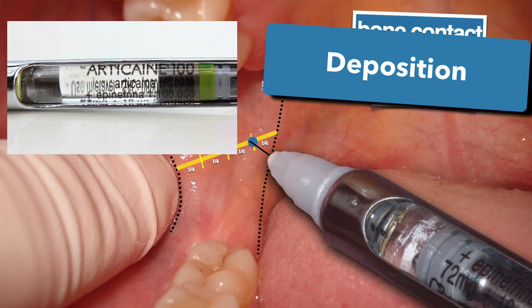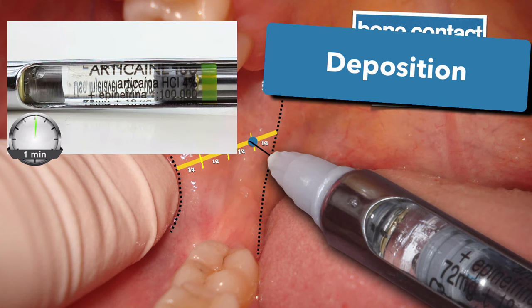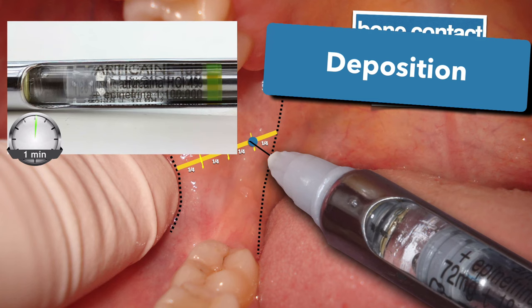You will administer the anesthetic solution slowly and steadily. The glass cartridge has advantages over the plastic cartridge — more about that in another video. The slow, steady injection should take about one minute. You don't need to time it exactly; just keep in mind that the injection needs to be slow.